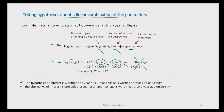One extra year in university college leads to approximately a 7.7 percent increase in wage — again, percent because it's a log-level model. This one sample suggests that the estimated effect of university college is greater than the effect of junior college in the sample.